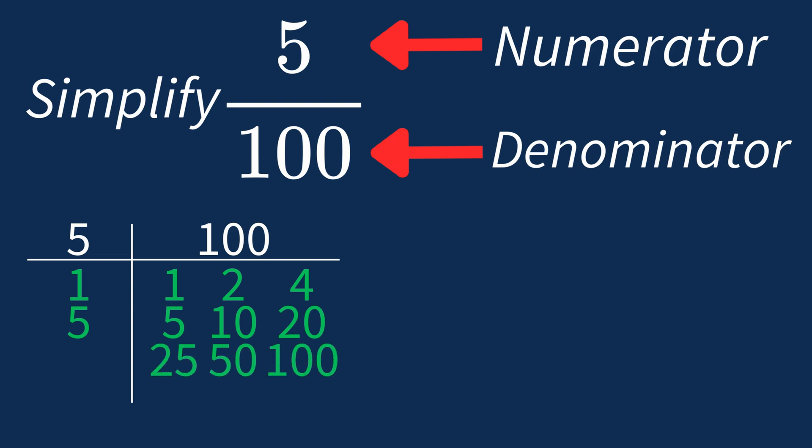So the largest common factor between 5 and 100 is 5. This means we can divide both the numerator and denominator by 5 to simplify the fraction.